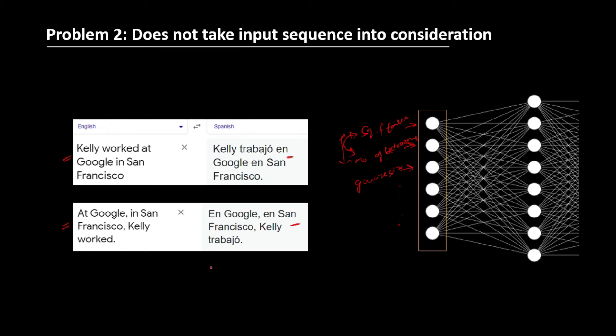But here in the natural language processing task, the order does matter. Because of these two problems, we cannot use artificial neural network for natural language processing task. So the people have come up with the recurrent neural network.